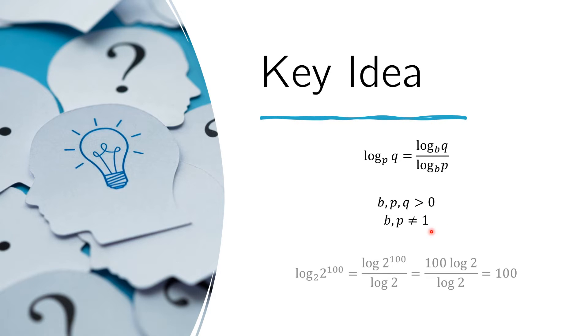So just an example, we have this expression log of 2 to the 100 base 2. So right off the bat, we know that because this is base 2, then the answer to this would be 100, right? The 2 here and the 2 here sort of cancels each other.